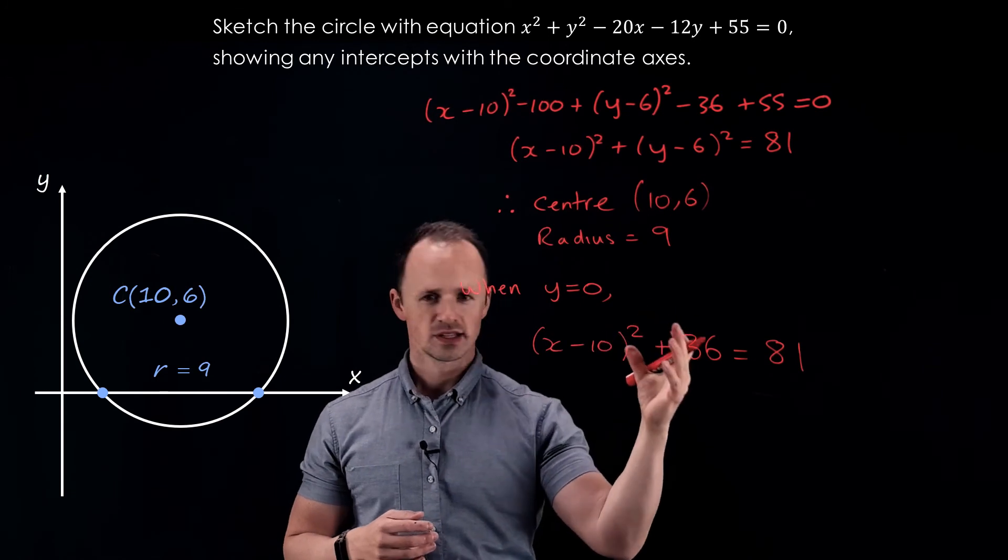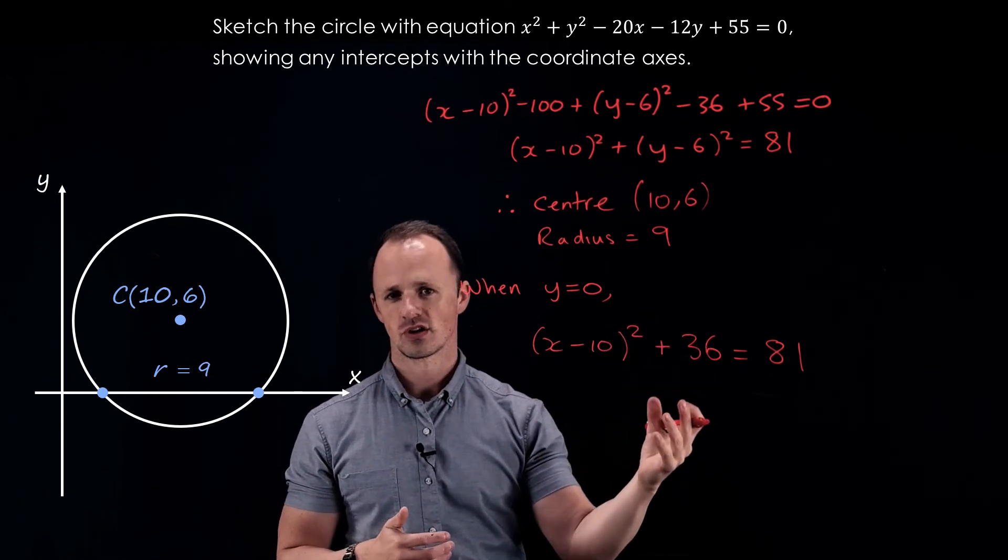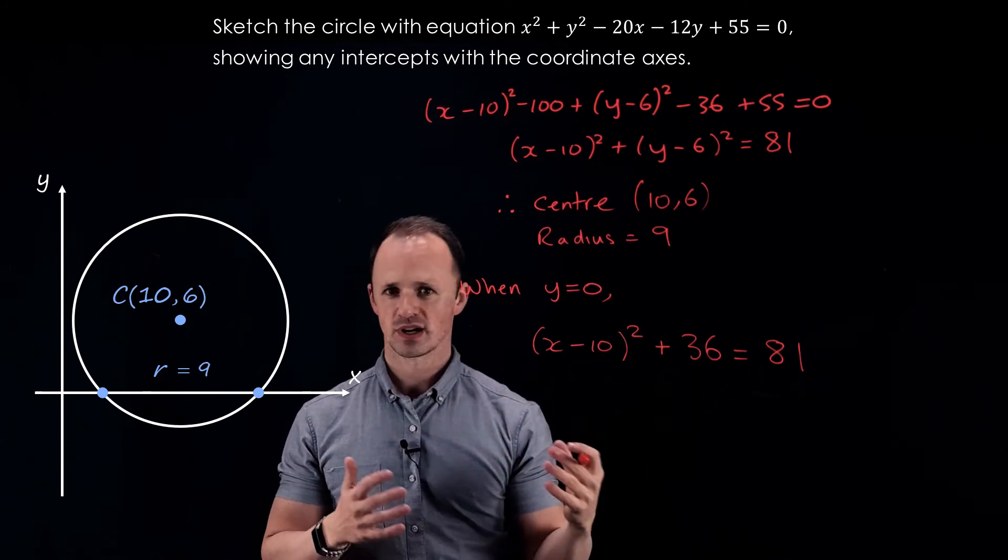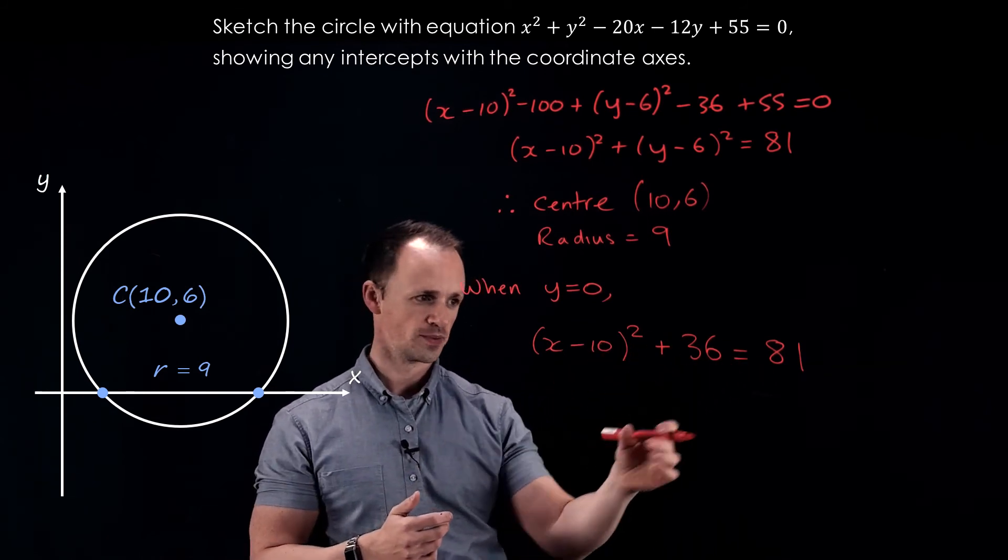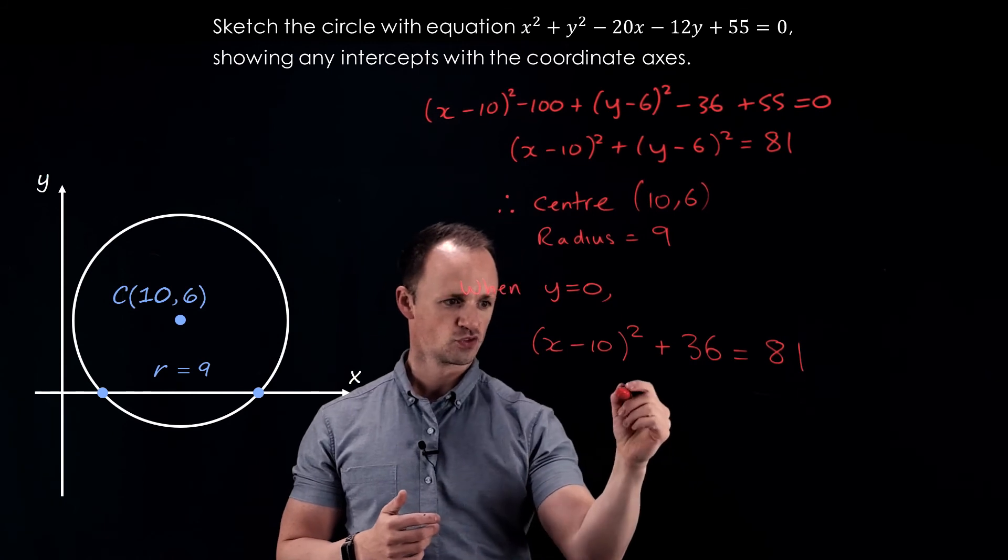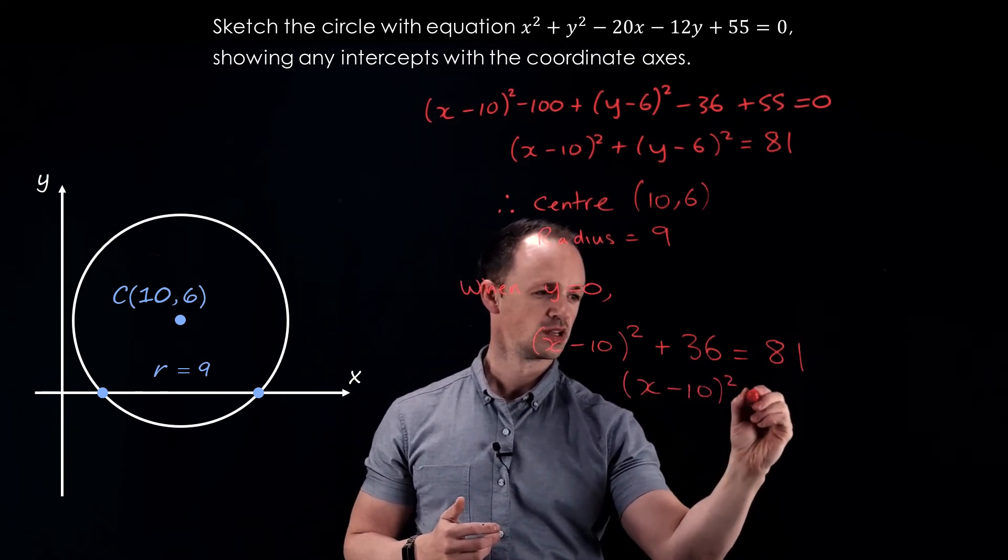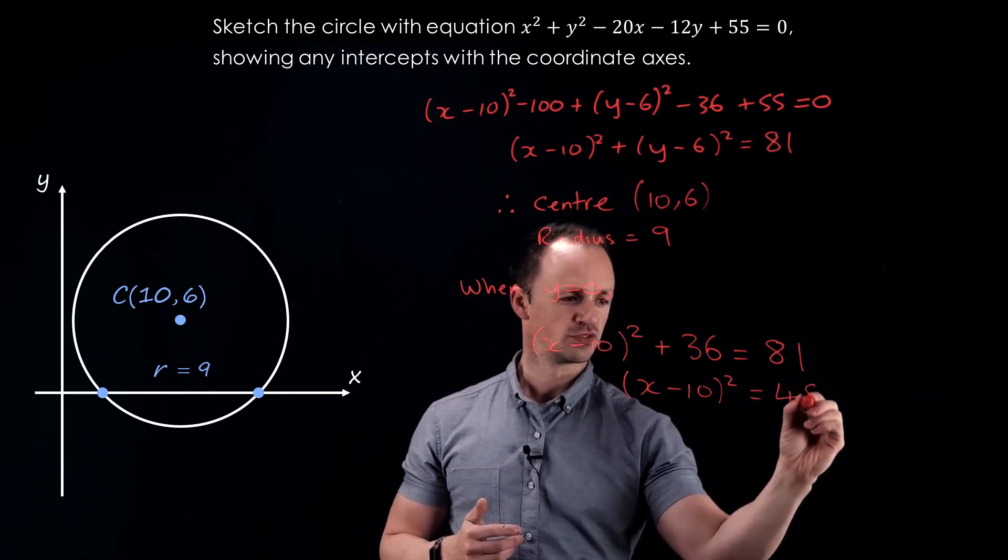Now rather than trying to make this equal 0 and trying to solve it, because it's already in completed square form, I can actually use that to my advantage and solve it in a slightly different way. I can subtract 36 from both sides. That gives me x minus 10 all squared equals 45.